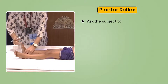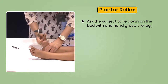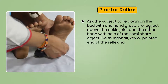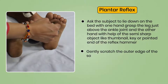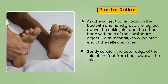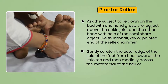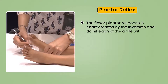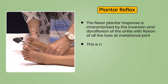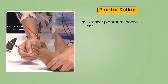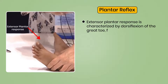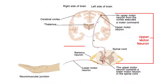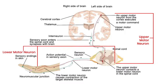For the plantar reflex, ask the subject to lie down on the bed. Grasp the leg just above the ankle joint with one hand, and with the other hand use a semi-sharp object such as a thumbnail, key, or pointed end of a reflex hammer. Gently scratch the outer edge of the sole from the heel towards the little toe, then medially across the metatarsals towards the ball of the great toe. The flexor plantar response is characterized by inversion and dorsiflexion of the ankle with flexion of all toes at the metatarsal joint — normally present in healthy subjects. The extensor plantar response is characterized by dorsiflexion of the great toe, fanning and extension of other toes with dorsiflexion of the ankle. It is found in patients with upper motor neuron lesion and is normally seen in children under 2 years of age and in deep sleep.